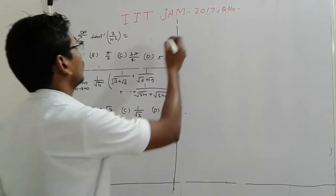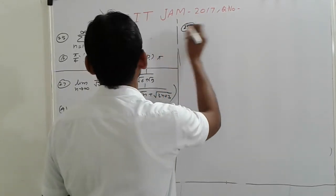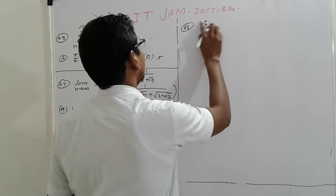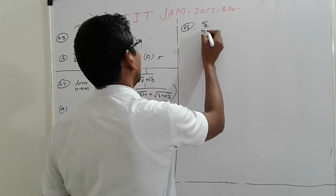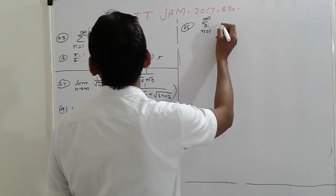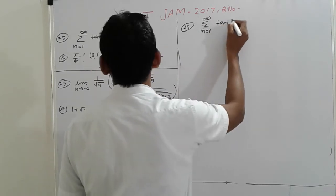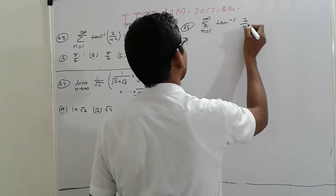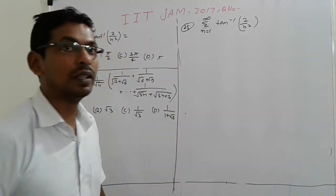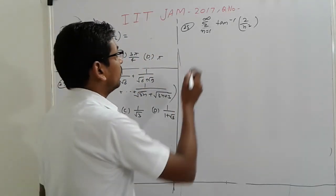So simple, we go to question 25 here. The question is: limit as n tends to infinity, summation of inverse 2 upon n square. So first we write down the formula, then we will simplify.